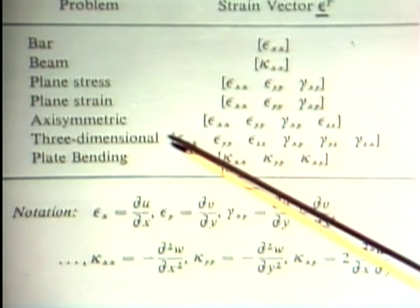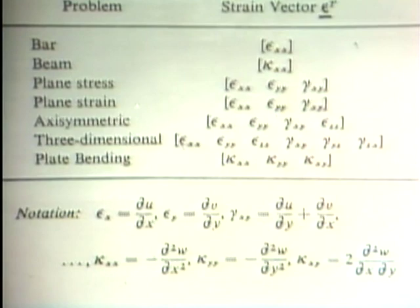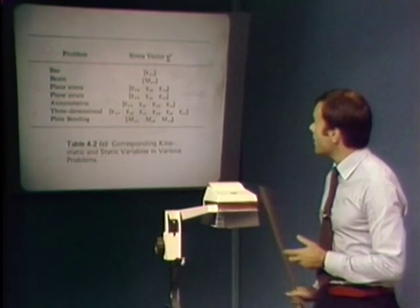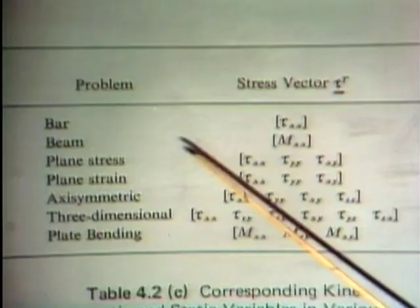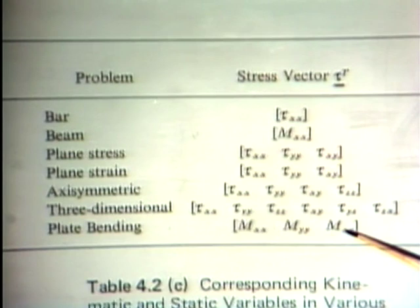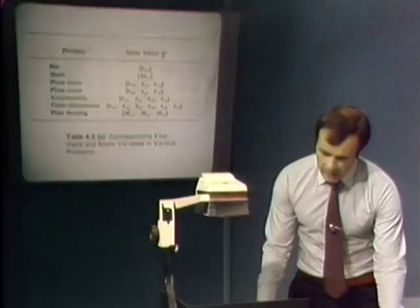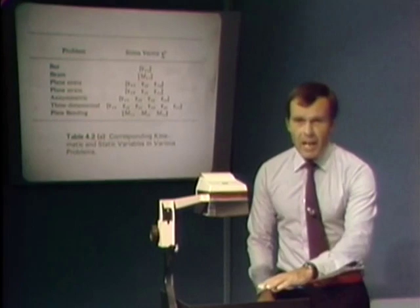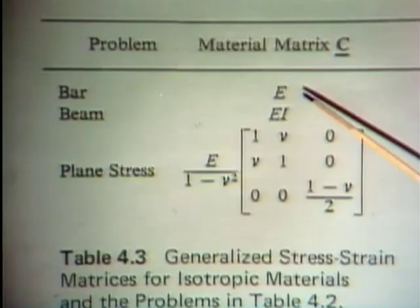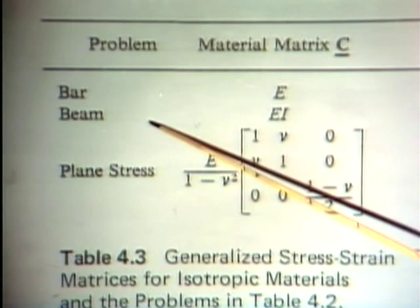The engineer must decide what kind of problem is at hand. Corresponding to these strains, we have stresses. For a beam, we talk about a bending moment — a generalized stress. In plate bending, we similarly talk about bending moments as generalized stresses. Otherwise, we have the actual stresses corresponding to the strains. Having decided what stresses and strains to look at, we also select the appropriate material matrix C, which is given from strength of materials. For a bar or truss, it is simply Young's modulus E; for a beam, it is the flexural rigidity EI; for plane stress analysis, this is the material law found in many textbooks.